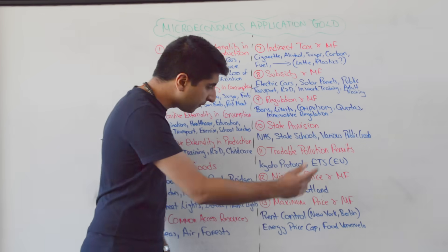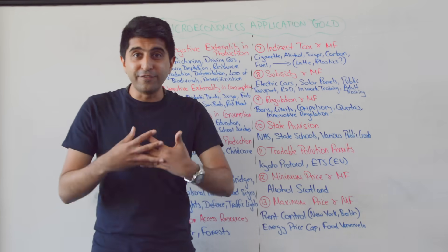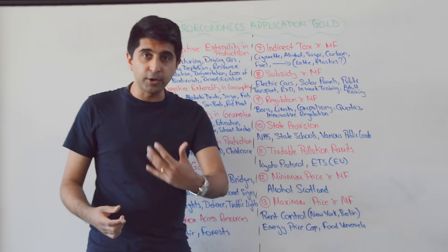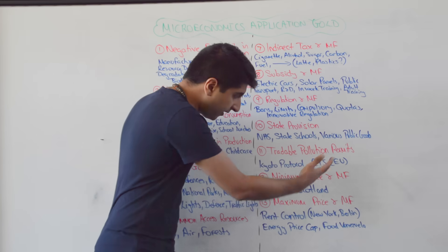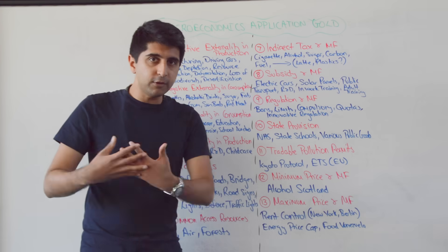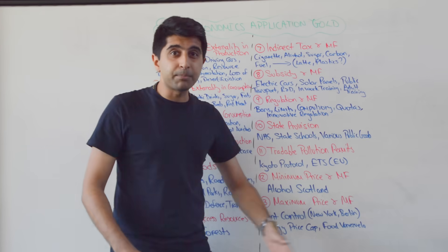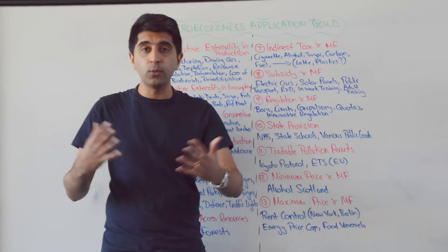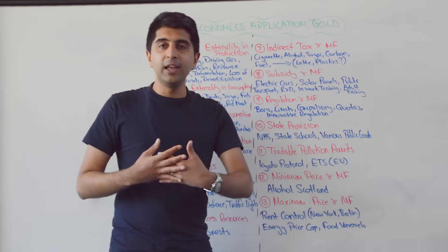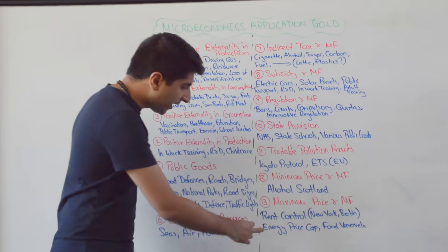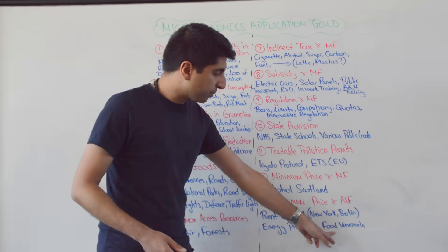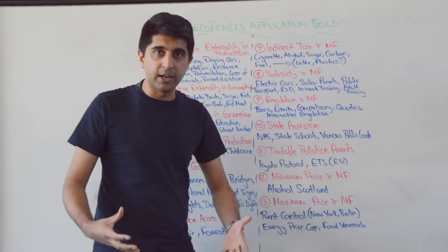Minimum prices to solve market failure: alcohol minimum pricing in Scotland, very recently implemented — 50 pence minimum price per unit of alcohol. Maximum prices in market failure: rent control in New York and Berlin, proposed by Jeremy Corbyn. If he wins the next election in 2022, he's going to impose rent control in London. Also the energy price cap that the Conservative Party launched, and maximum prices on basic food items in Venezuela.